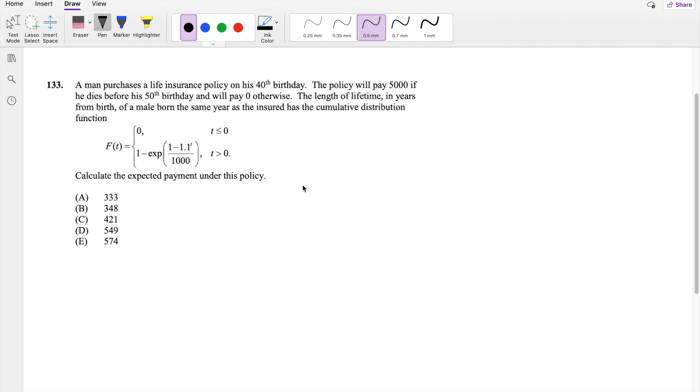So this question says, a man purchased a life insurance on his 40th birthday. If he dies before 50, the insurance pays $5,000. And if they live longer than 50 years old, they pay $0. The length of the lifetime in years from birth of a male born the same year as the insured has a cumulative distribution function of this thingy right here. And calculate the expected payment under this policy.